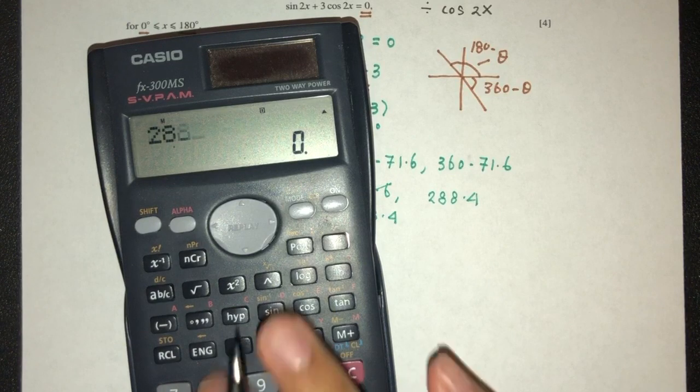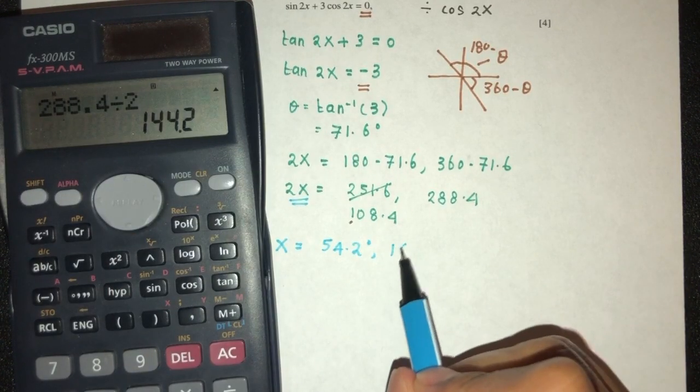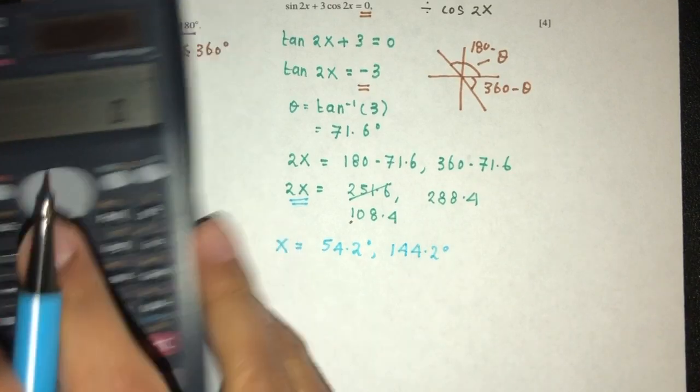And then 288.4 divided by 2, that is 144.2. Now, if you want to, we can check if we have any other values.